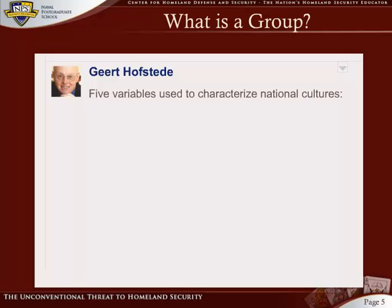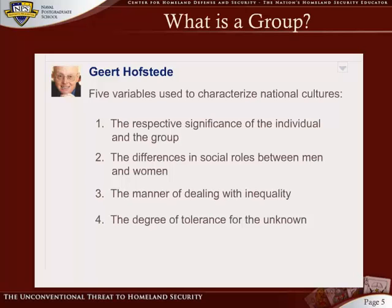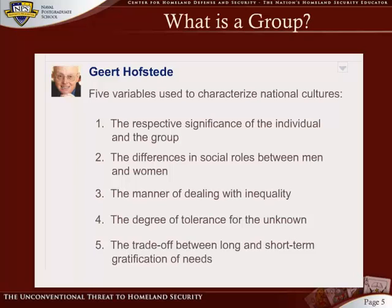These variables will be extremely helpful when thinking about how social and cultural influences can shape individual beliefs. They are as follows: 1. The respective significance of the individual and the group. 2. The differences in social roles between men and women. 3. The manner of dealing with inequality. 4. The degree of tolerance for the unknown. 5. The trade-off between long- and short-term gratification of needs.